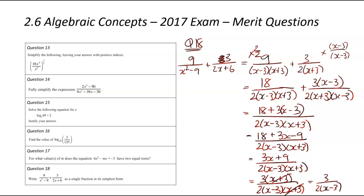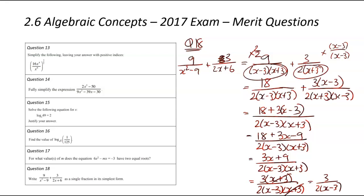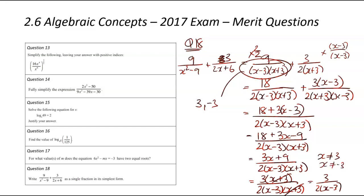The only thing to note here: because we're dealing with fractions and denominators, we should check what the answer can't be. If at any stage x is 3 or negative 3, the denominator becomes 0 — a math error. So for our solution, x cannot be 3, and x cannot be negative 3. That wraps up question 18 and all the merit questions in the 2017 exam. Hopefully you found them useful — keep an eye out for some other revision material.